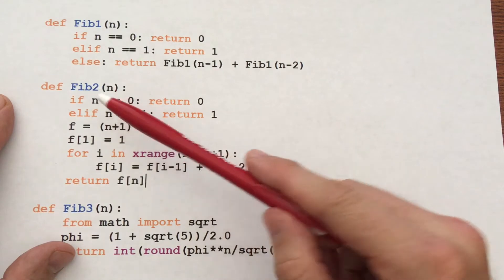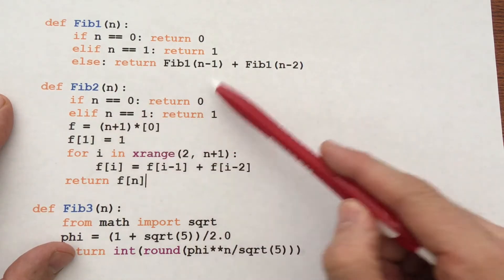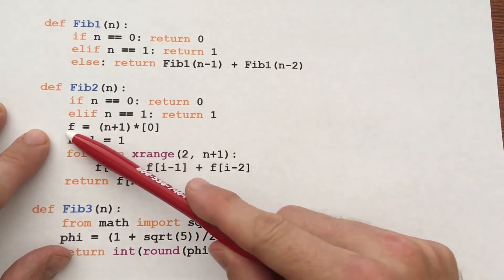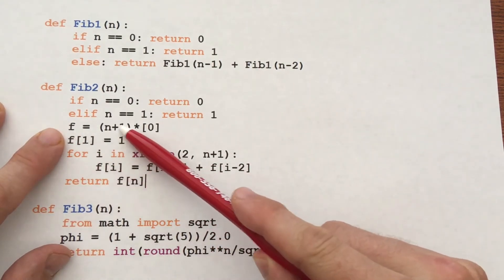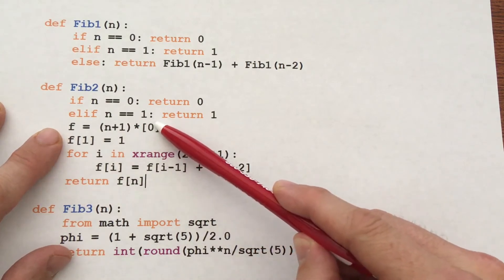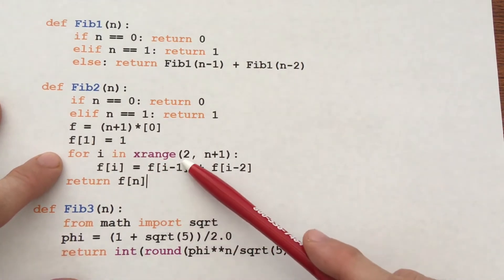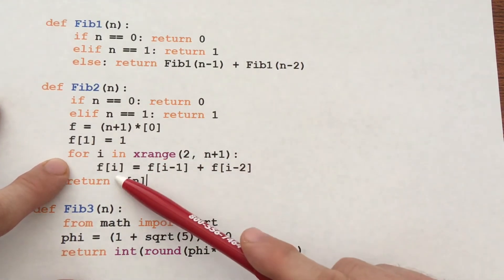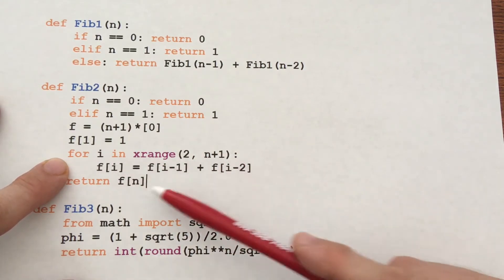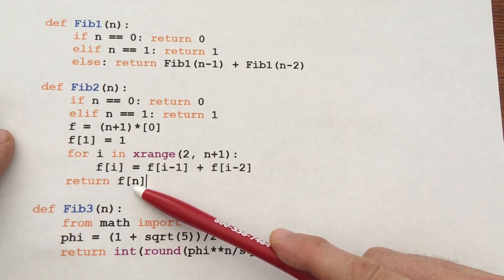This one, fib2, we're going to construct an array and work our way up. We handle the base cases the same way, and now we're going to construct an array of length n plus 1 copies of 0. F0 is 0, F1 is 1. And now we work our way up, going from 2 to n. We just define F sub i to be the sum of the two previous terms, and then we return the last element, which is the one we're looking for.